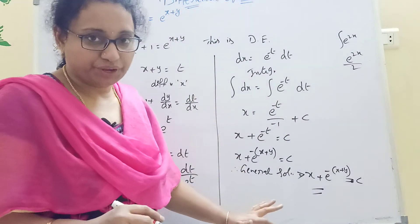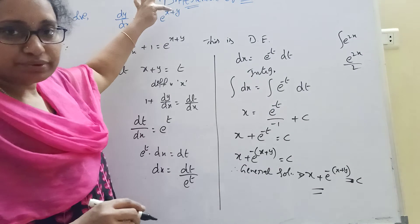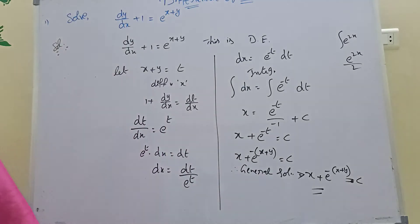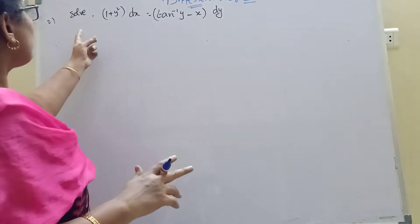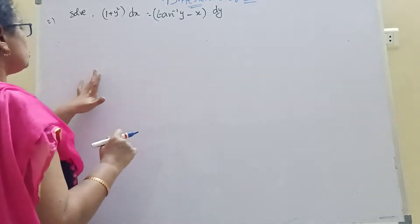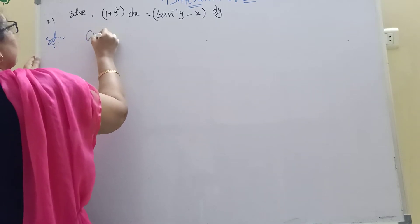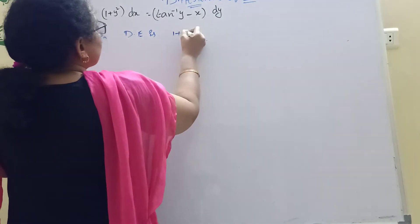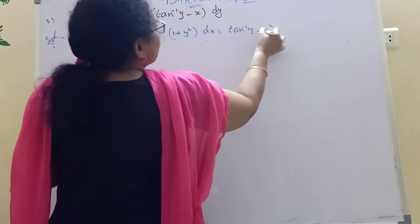Remember, e is in the form of this problem. Here we have a second problem. The equation is: (1 + y²)dx equals (tan⁻¹y – x)dy. The given differential equation is 1 plus y squared times dx equals tan inverse y minus x into dy.